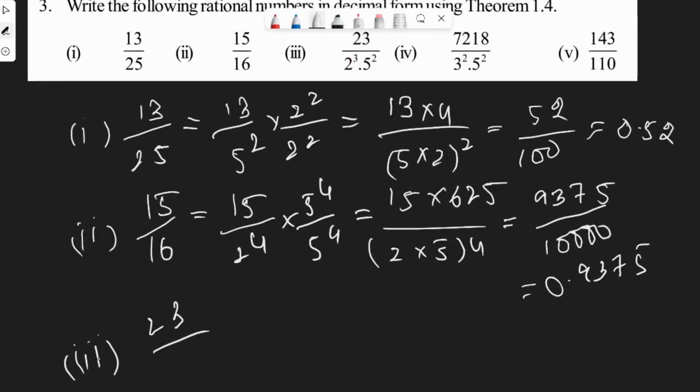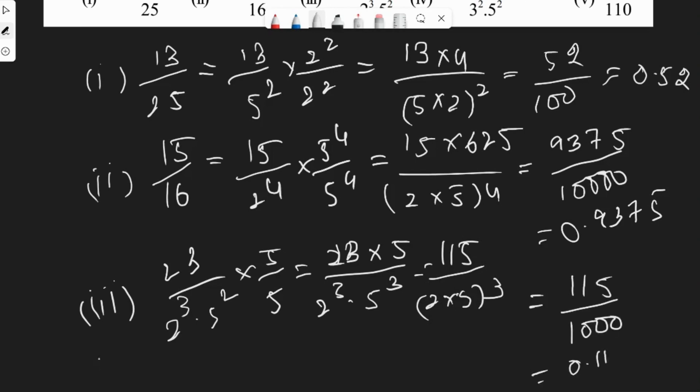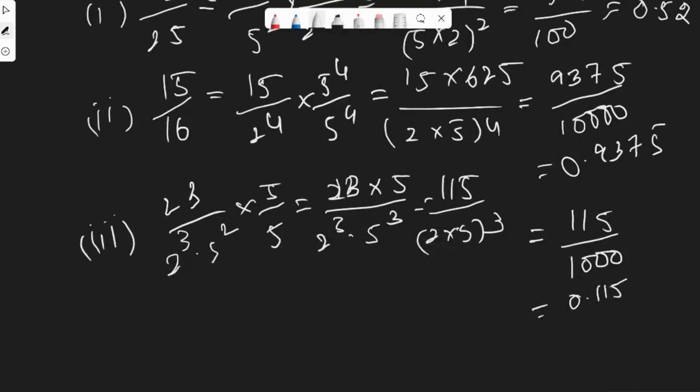Third one: 23 by 2 cube into 5 square. To get the same power as 2 power m and 5 power m, we need to multiply 5 on both numerator and denominator. Multiplying 5 on both sides, you get 23 into 5 by 2 cube into 5 cube. 23 into 5 is 115 by 2 into 5 whole cube, which is 1000. So 115 by 1000 will get 0.115.